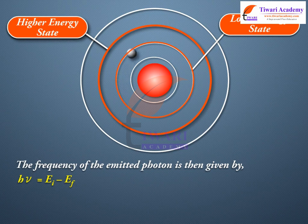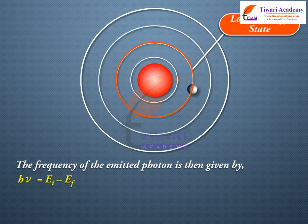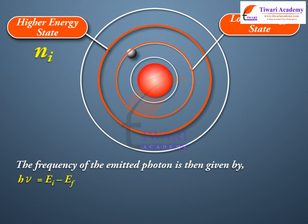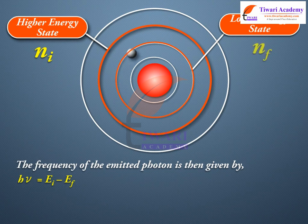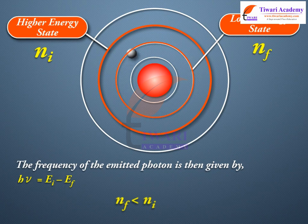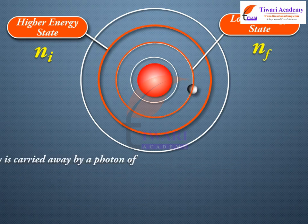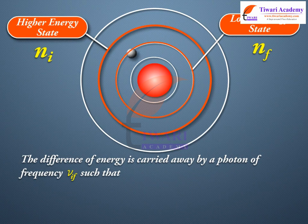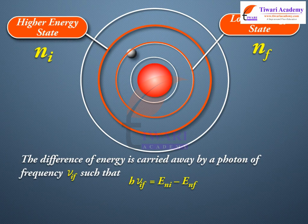When an atom makes a transition from the higher energy state with quantum number ni to the lower energy state with quantum number nf, where nf is less than ni, the difference of energy is carried away by a photon of frequency nu_if such that h*nu_if = Eni - Enf.